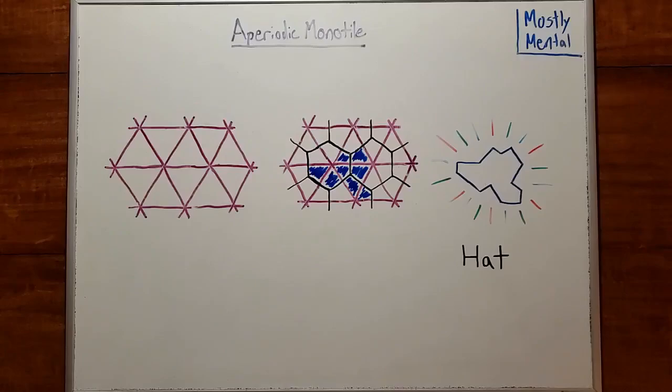When we tile the plane, it looks something like this. It's a pretty pattern, and it feels like there are some hints of structure there, but it doesn't look like it repeats. So how can we prove it?